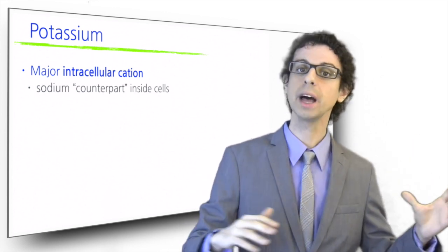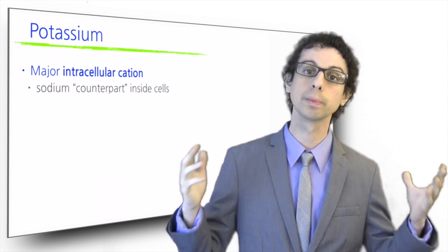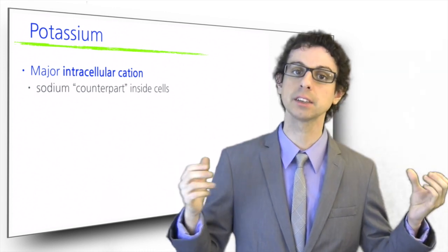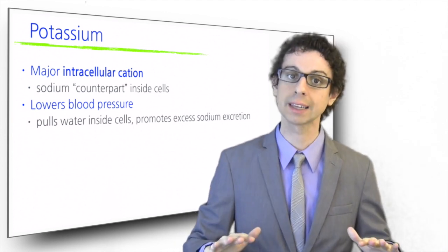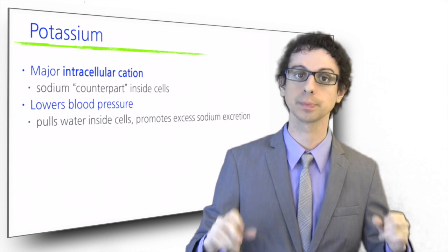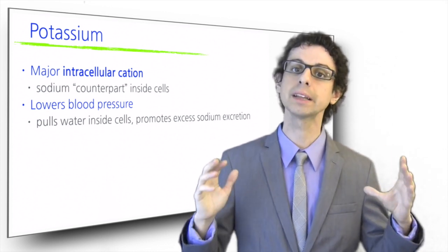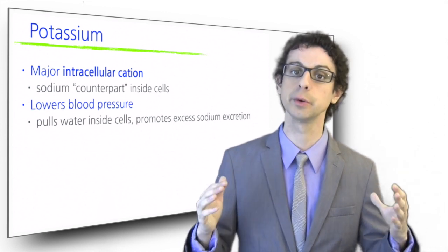Because of this, sodium and potassium often have opposite effects, for example, on blood pressure. Because potassium pulls water inside the cells, it lowers blood pressure, while sodium raises it because it pushes it out. Potassium lowers blood pressure also by allowing the kidneys to excrete excess sodium with the urine.